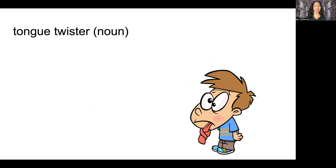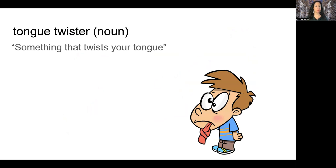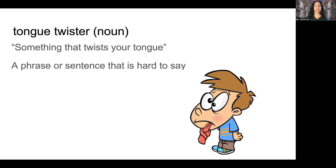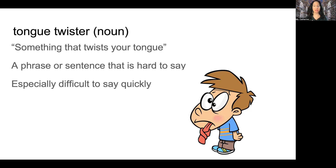So a tongue twister is a noun. The part of speech is a noun — tongue, all knotted up, would be the adjective, and twister is the noun. But tongue twister together is more of a noun. A tongue twister is something that twists your tongue, or you can say it's all knotted up. It's also a phrase or sentence that is hard to say, especially difficult to say quickly. So today we are going to do tongue twisters, but I will say them a lot slower. What I'd like you to do is say them even faster — we start out slow and then keep saying them faster, gradually.